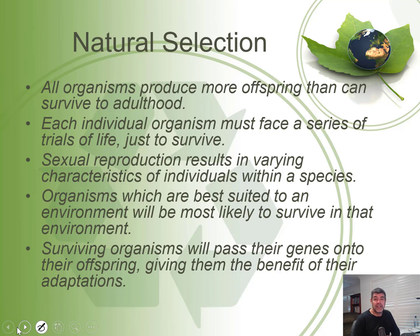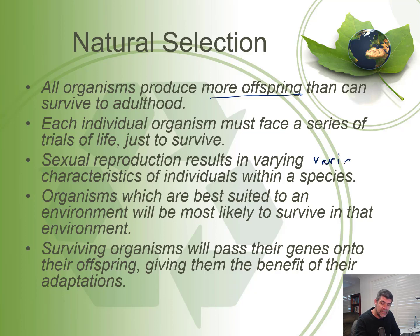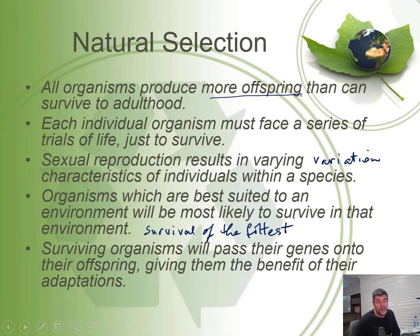Darwin's theory is based on these premises, so we can work through these statements to get some context for our look at finches. The first thing is that all organisms produce more offspring than can survive to adulthood. Each individual organism must face a series of trials of life just to survive, and not all of them survive to adulthood or at least to reproductive age. Sexual reproduction results in varying characteristics of individuals within a species — that is variation. Organisms which are best suited to an environment will be most likely to survive, and that's often referred to as survival of the fittest.